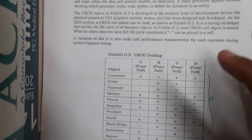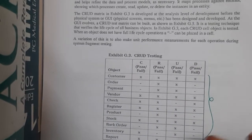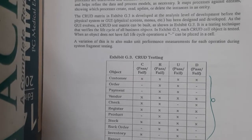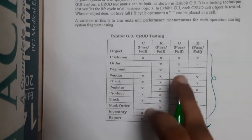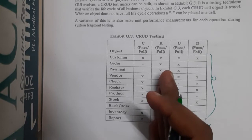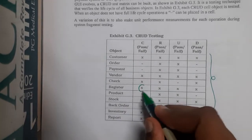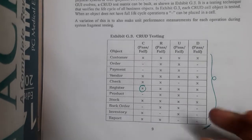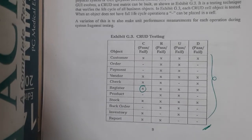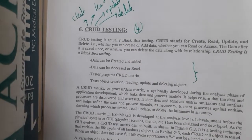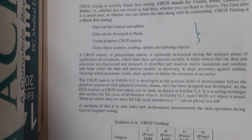Based on this matrix, the developers can understand where there are issues. For example, registration should be possible — you need to at least create the data, you can create your account. But if it is not passing, the developer will update and fix those things accordingly. This comes under CRUD testing.